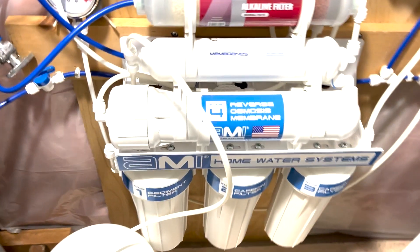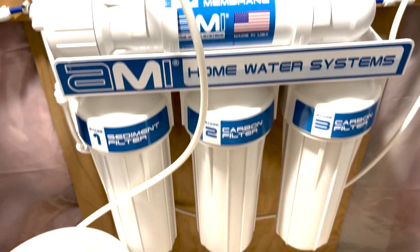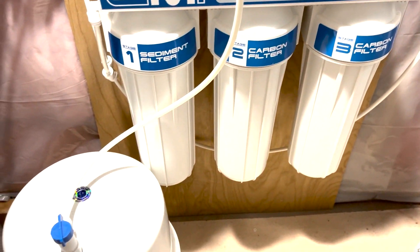This is the AMI reverse osmosis water filter, which I really enjoy. It goes through and keeps fresh water for us. You can see the reserve tank that holds up the three gallons down there.